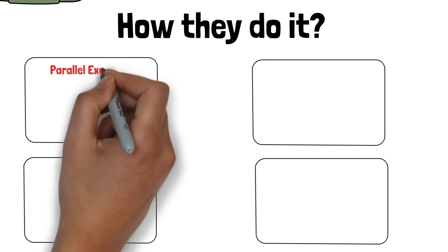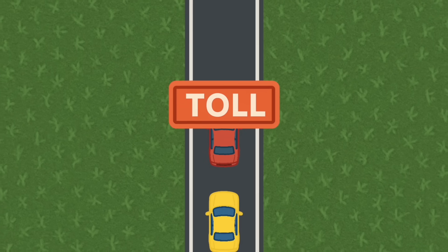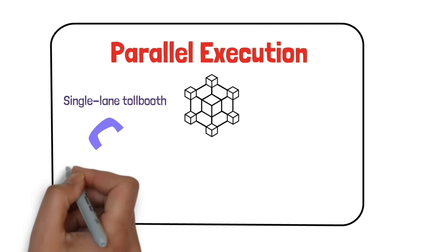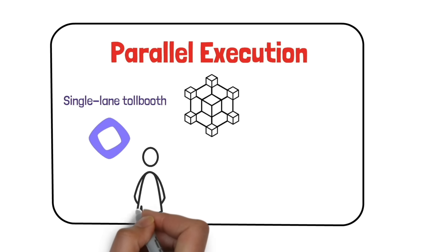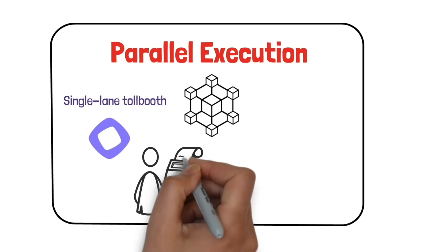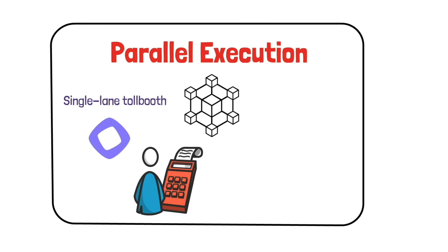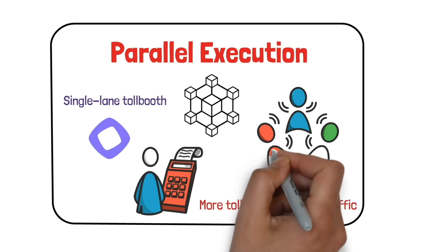First, parallel execution. Many blockchains process transactions one at a time — it's like a single-lane tollbooth where every car has to wait its turn. Monad opens up more lanes and more tollbooths. It looks at transactions, figures out which ones don't depend on each other, and runs them all at once. More tollbooths, faster traffic. This makes everything from apps to payments to games run smoother and scale to way more users.